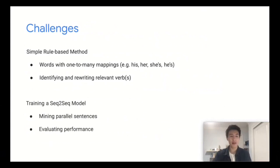On the other end of the spectrum, we could also train a sequence-to-sequence model. But a question here is, how do we mine parallel sentences that are clean and of high quality, since there isn't really a data set for this task? Another tough question is, how do we evaluate performance if we have multiple models and want to compare between them?